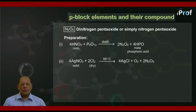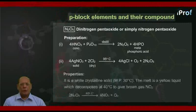Second method is 4AgNO3 solid plus 2Cl2 dry gas at a temperature of 95 degrees Celsius. The two combine to give 4AgCl plus O2 plus 2N2O5.